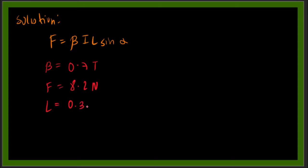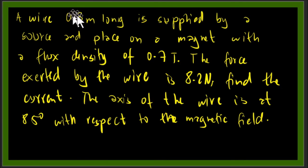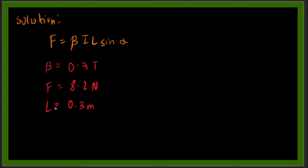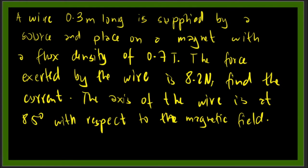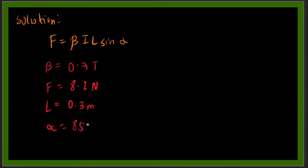Let's have the solution. So F equals β I times L sine α. Our givens: β equals 0.7 tesla, F equals 8.2 newtons, L is 0.3 meters from this problem, and α equals 85 degrees. So we're solving this part here—just substitute all the givens.